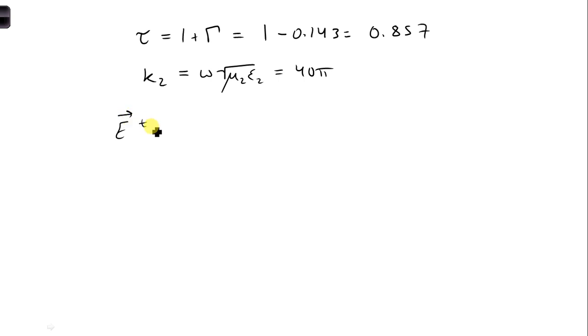So, our transmitted electric field, a function of x and t, it's pointing in the same direction, so there's no sign change. It's still in the y-hat direction, just like our incident wave. We have 8 multiplied times our transmission coefficient, 0.857.